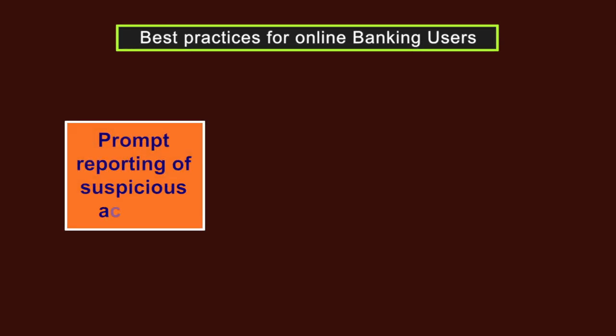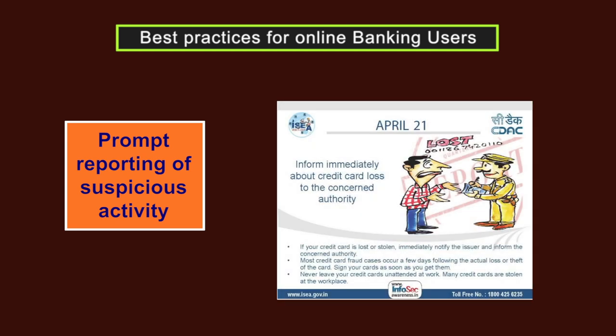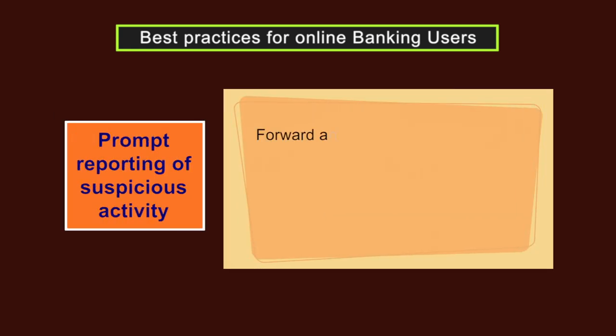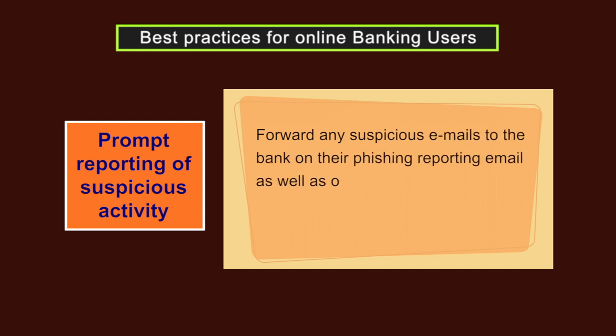Last but not the least is prompt reporting of suspicious activity. Contact your bank immediately if you think someone knows your security access code, or in case of theft of your code or money, or in case you have forgotten your credentials. Forward any suspicious emails to the bank on their phishing reporting email as well as on the CERT email ID shown on screen. Your prompt action is crucial to prevent any further damage.